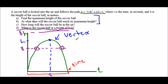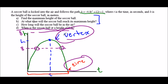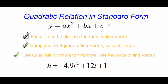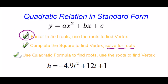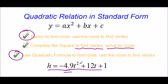Let's start by finding the fundamentals of any quadratic relation: the vertex and the roots. When given a quadratic in standard form, there are three methods in our tool bag. We could factor to find the roots and use the roots to find the vertex. We could complete the square to find the vertex. Or we could use the quadratic formula to find the roots and use those to find the vertex. As soon as I see a decimal in an equation, I'm not going to try to factor it, so we'll use the quadratic formula.